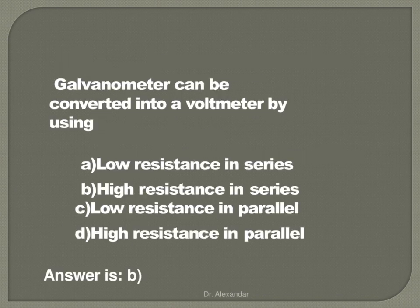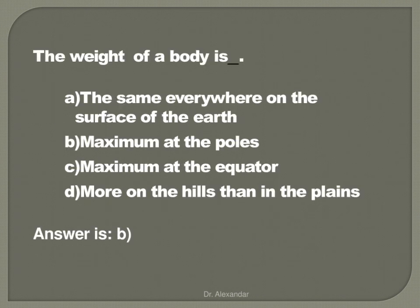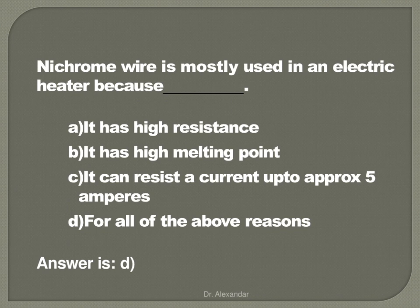A galvanometer can be converted into a voltmeter by using a high resistance in series. The weight of a body is maximum at the poles. Nichrome wire is mostly used in an electric heater because it has high resistance, a high melting point, and it can resist a current up to 5 amperes.